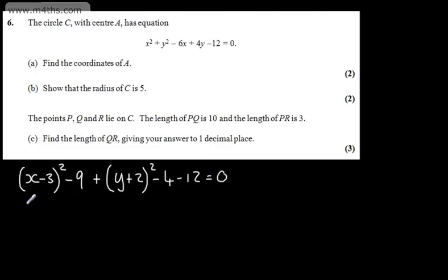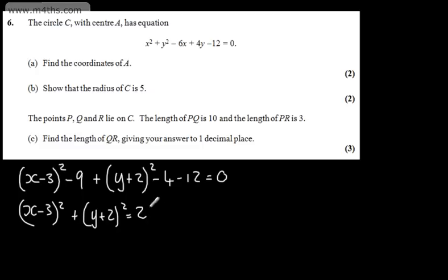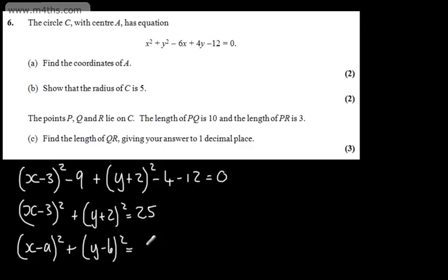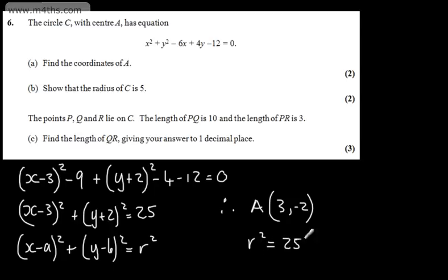So from this we can write that x minus 3 all squared plus y plus 2 all squared is equal to 25, adding the constants to the other side. The general form of a circle is x minus A all squared plus y minus B all squared is equal to R squared. Therefore we've got our centre A as (3, -2), and we can say that the radius squared is equal to 25, therefore the radius is equal to 5.